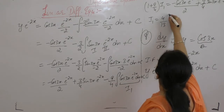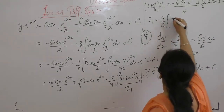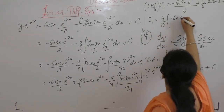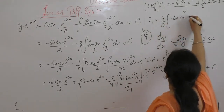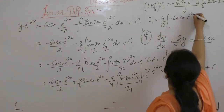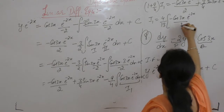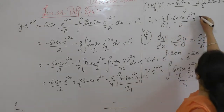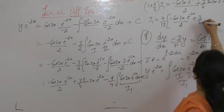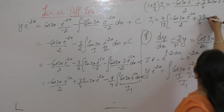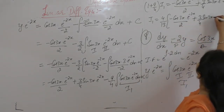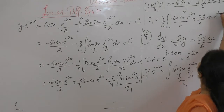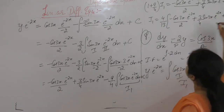So, 4 by 13 times minus cos(3x) · e^(-2x) by 2 plus 3 by 4 · sin(3x) into e^(-2x) plus c.